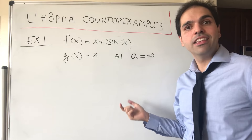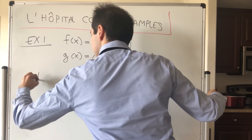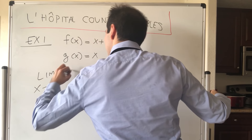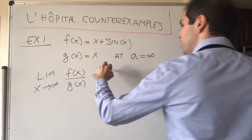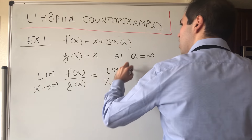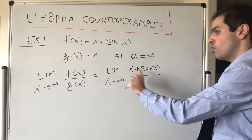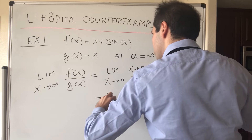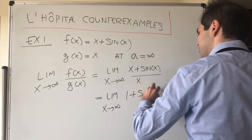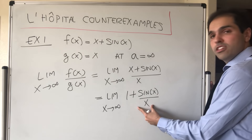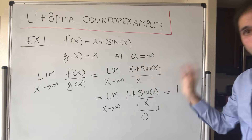Let's first calculate the limit as x goes to infinity of f over g. That equals the limit as x goes to infinity of (x + sin(x)) / x. If you split it up as x/x and sin(x)/x, that equals the limit as x goes to infinity of 1 + sin(x)/x. By the squeeze theorem, sin(x)/x goes to zero, and so in the end the limit should be 1.